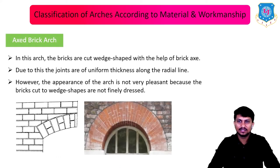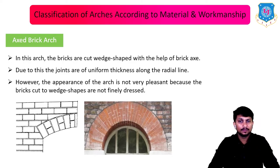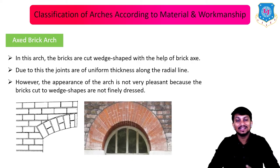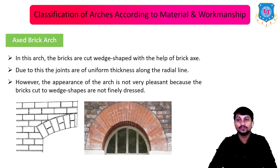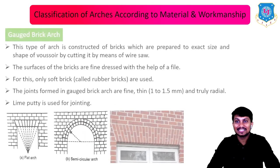Second is the axe brick arch. In this arch the bricks are cut wedge-shaped with the help of a brick axe, making the joints of uniform thickness along the radial lines. However the appearance is not very pleasant because the bricks cut to wedge shapes are not finely dressed.